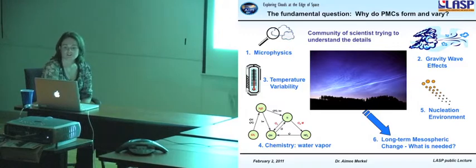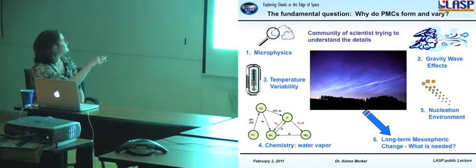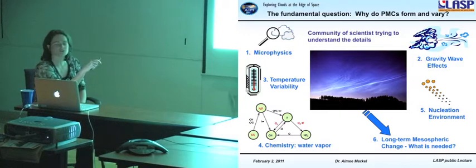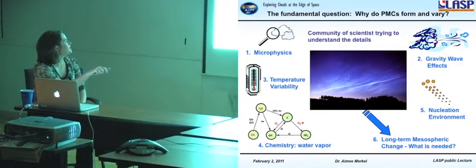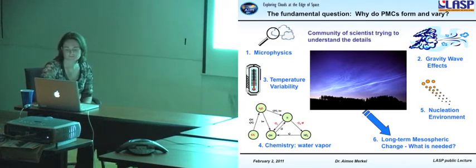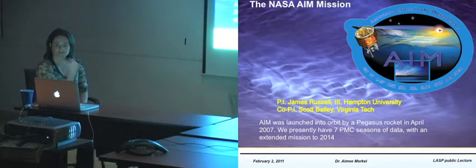So the fundamental question that all PMC scientists are asking is why do PMCs form and why do they vary? Now to get a handle on climate change, we have to know these things to give us some sort of baseline of do we understand the dynamics, do we understand all these things? Microphysics, temperature variability, chemistry, water vapor, gravity wave effects or planetary wave effects, large dynamics, the nucleation environment. How are these able to form? It's not homogeneous nucleation, they need some sort of dust or something to be able to nucleate on. And all of these things play into this long-term change, which is the ultimate answer that we're all searching for.